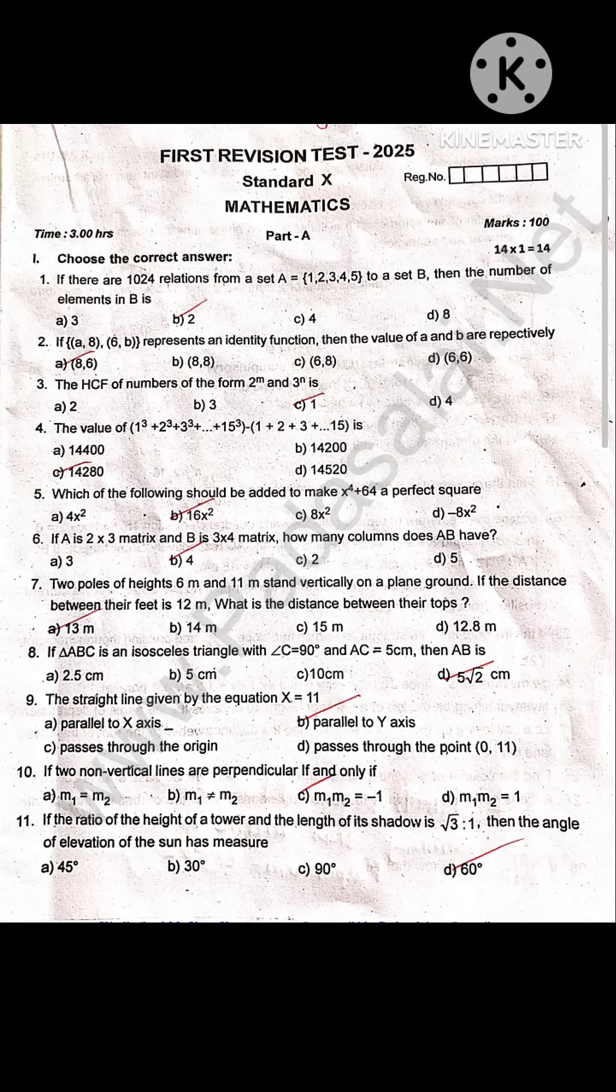If two non-vertical lines are perpendicular if and only if M1M2 is equal to minus 1. If the ratio of the height of a tower and the length of its shadow is root 3 is to 1, then the angle of elevation of the sun is 60 degree.